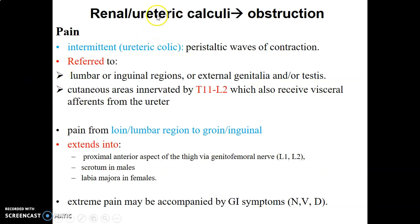So what is renal calculi? Calculi are stones. You can have stones in the kidney or stones in the ureter, caused by infection or dehydration. The minerals or ions in the urine form stones that can lead to obstruction. To know that a patient has renal or ureteric calculi before imaging, the patient will complain of pain — what you call ureteric colic. Ureteric colic is characterized by a peristaltic wave of contraction.